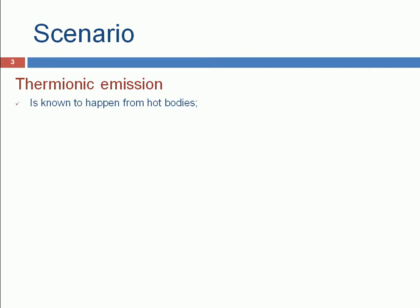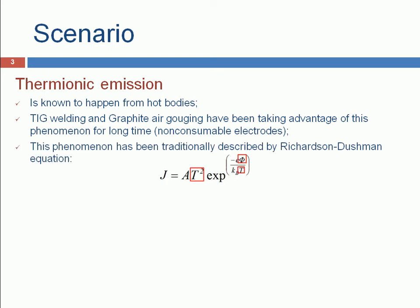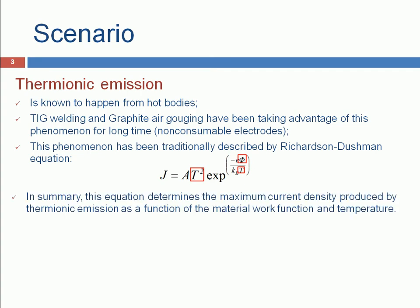Thermionic emission is the electron emission known to happen from hot bodies. TIG welding and graphite air gouging have been taking advantage of this phenomenon for a long time. Thermionic emission has been traditionally described by Richardson-Dushman equation that, in summary, determines the maximum current density produced by thermionic emission as a function of the material work function and temperature.